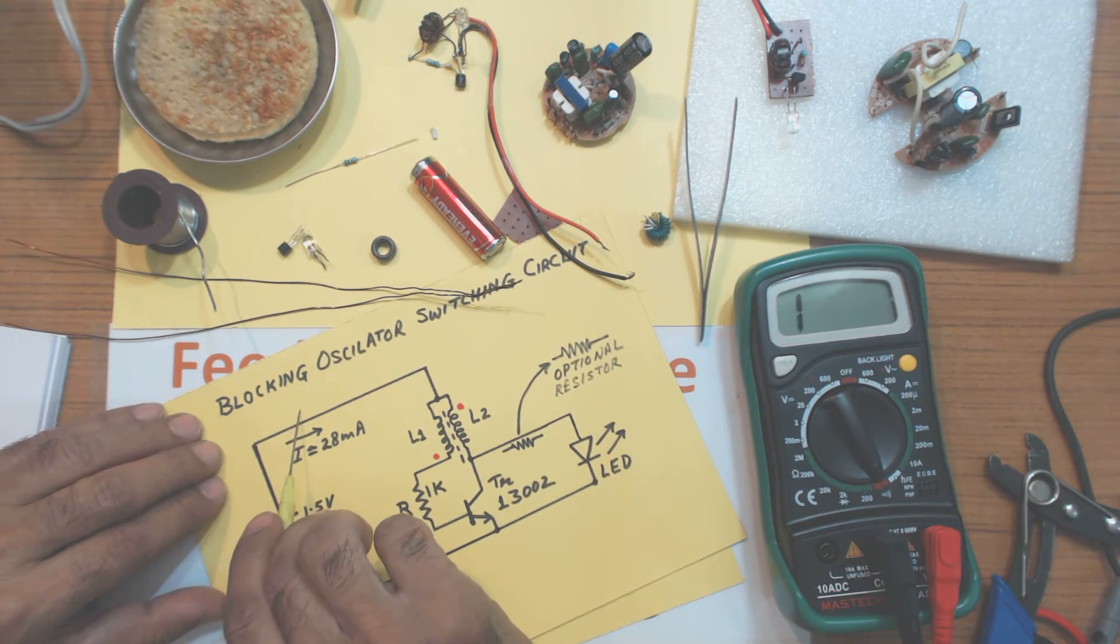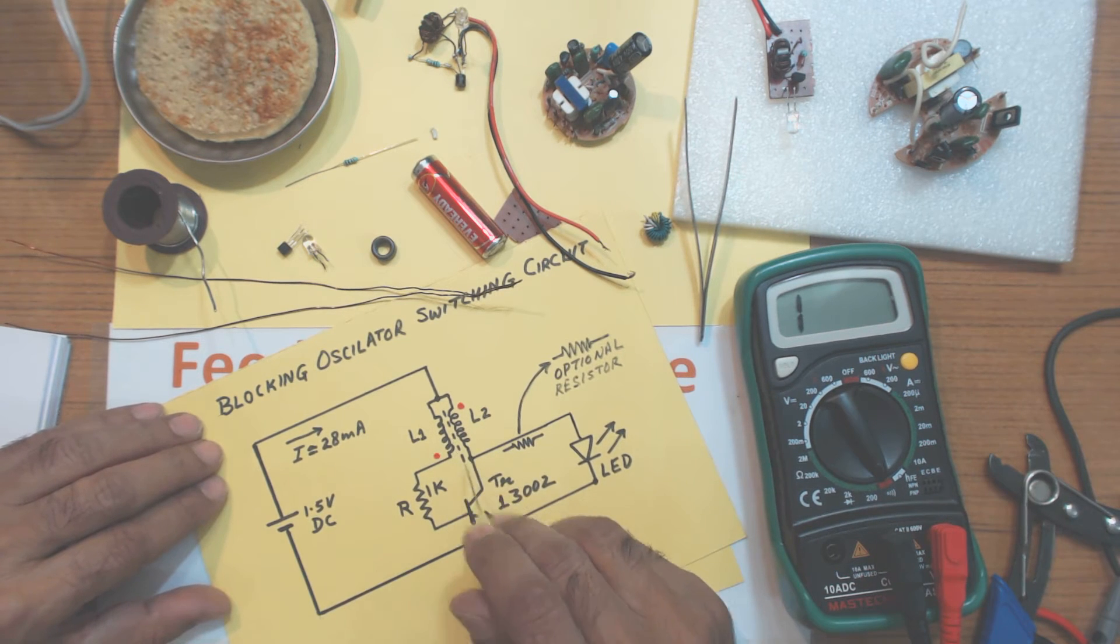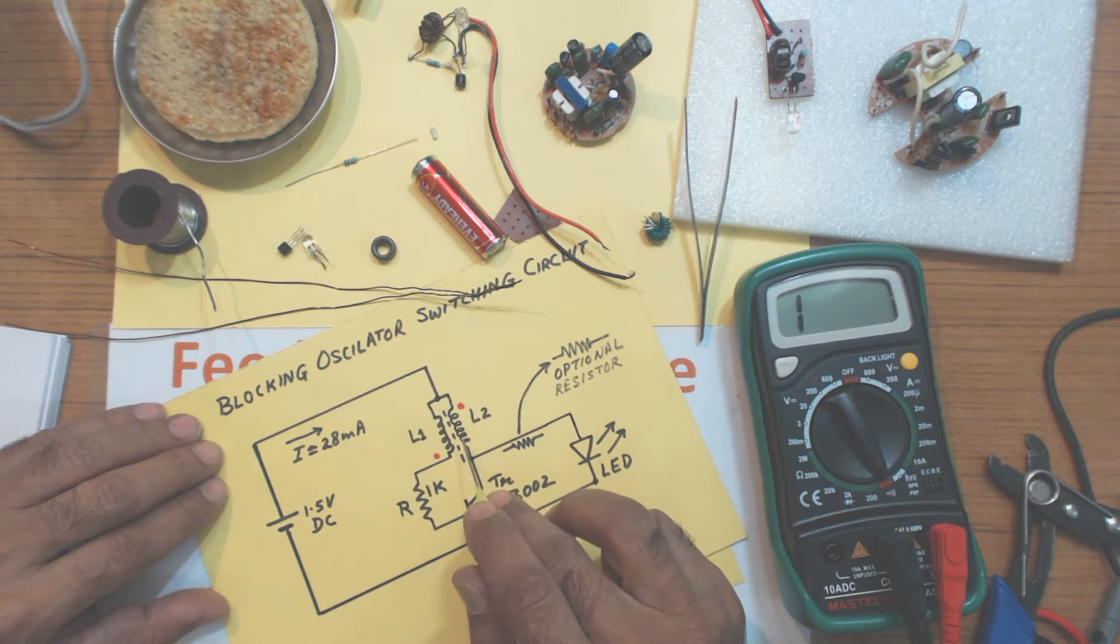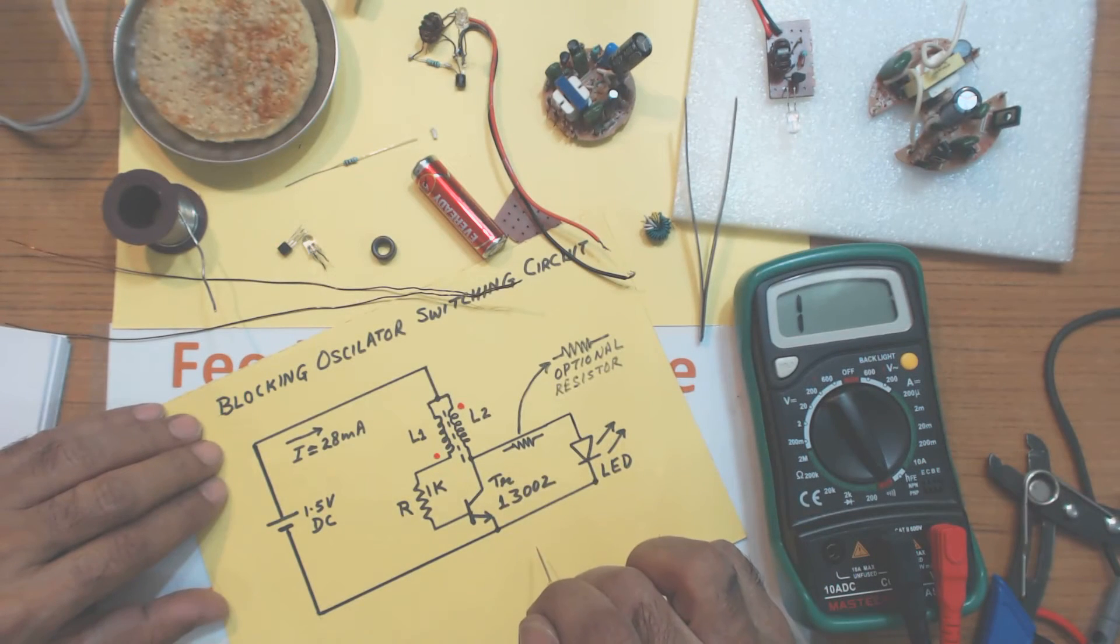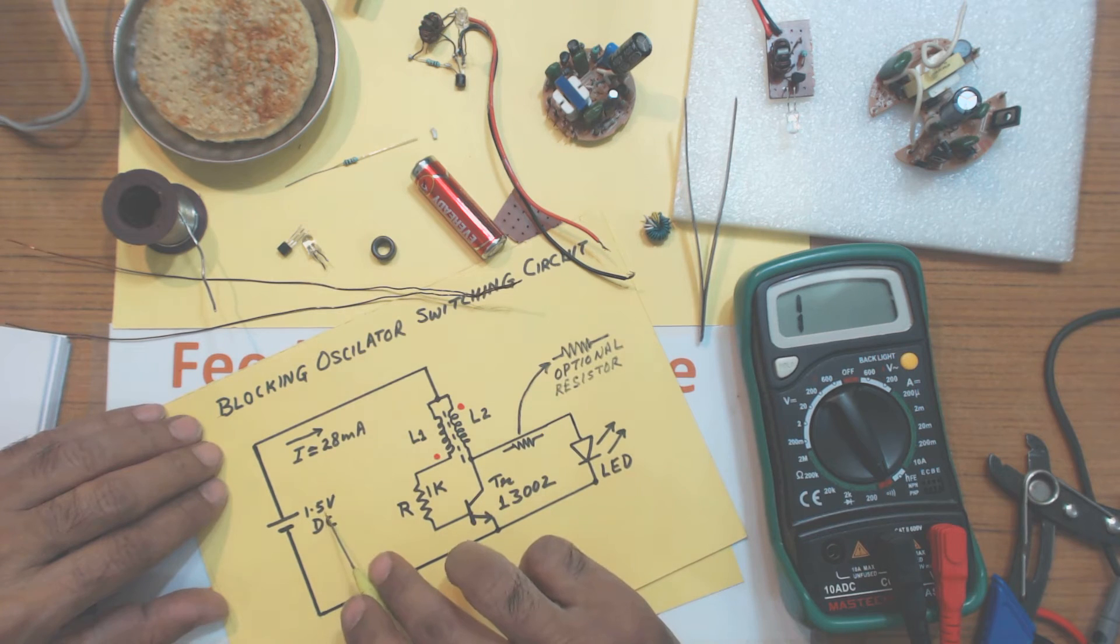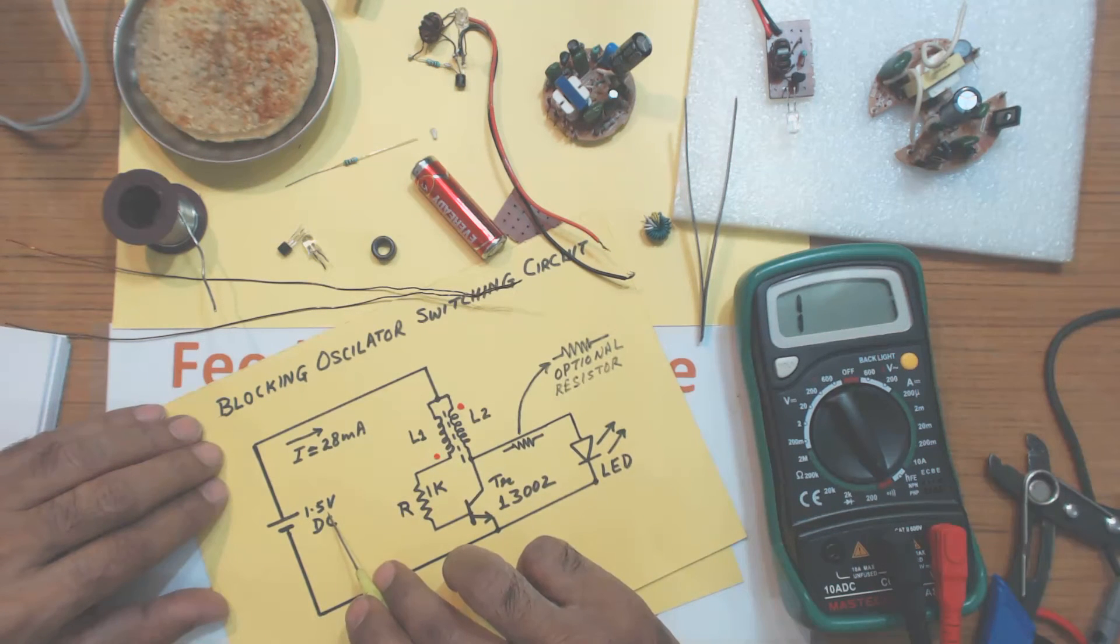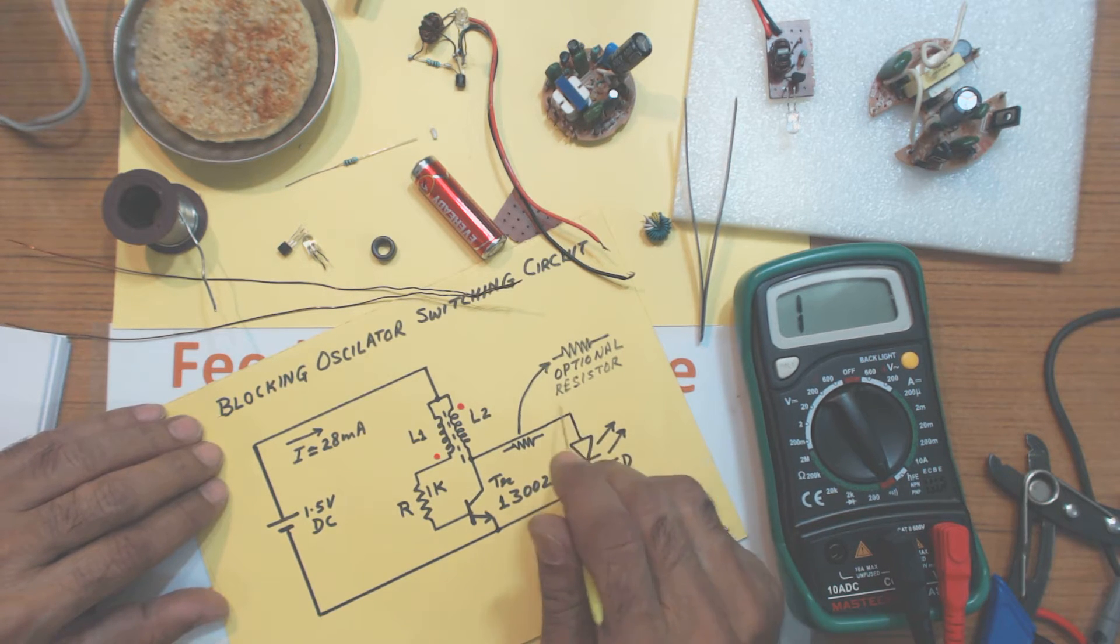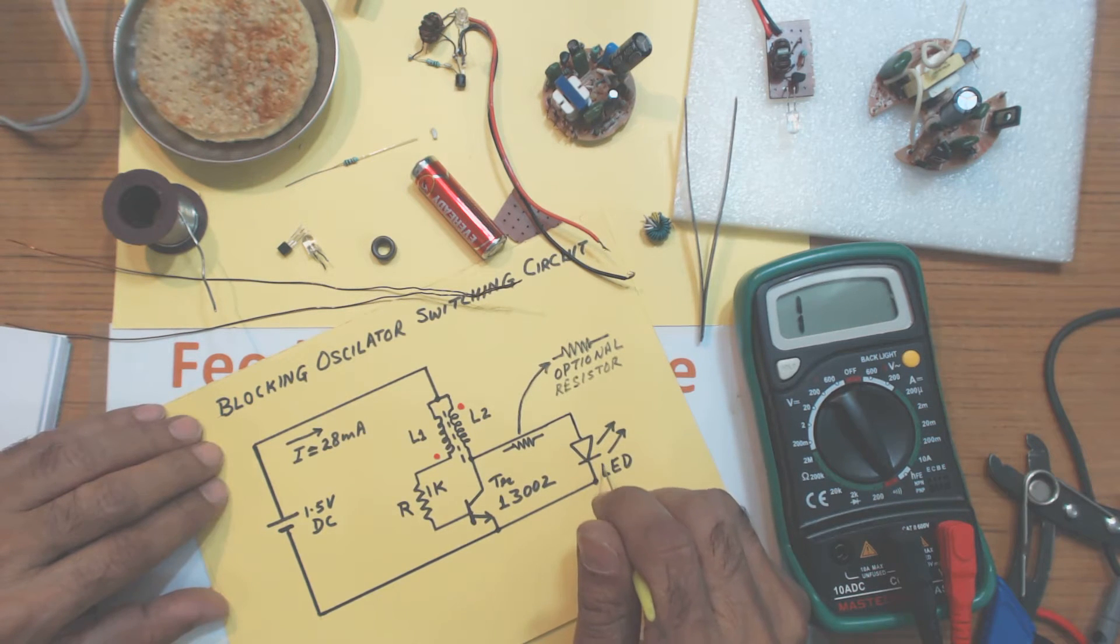That is why it is called blocking. It blocks. That means the transistor turns off. And after that the cycle repeats again. So, it turns on for a shorter time, then turns off. So, you get pulses at the output with spikes which are greater than 1.5 volt. So, you get a voltage, instantaneously, higher voltage 4 volt to 5 volt and that lights up the LED.